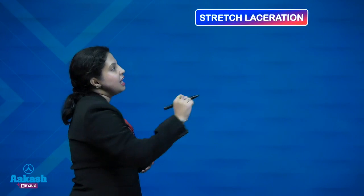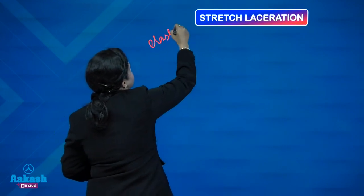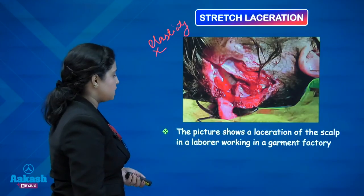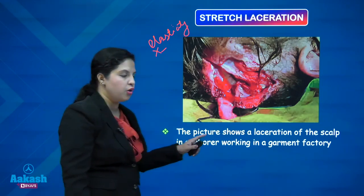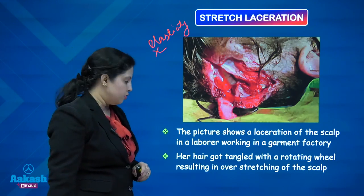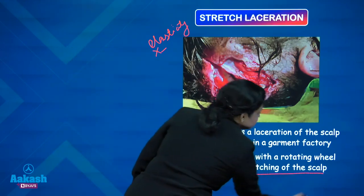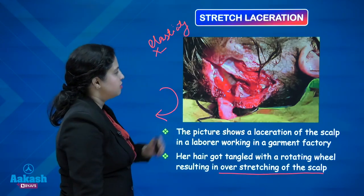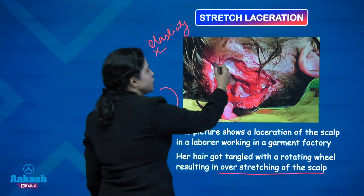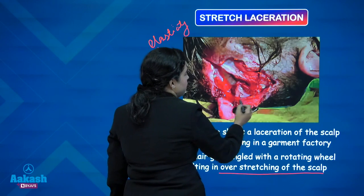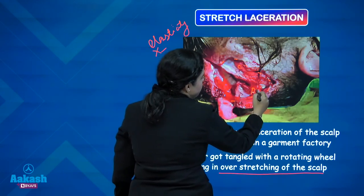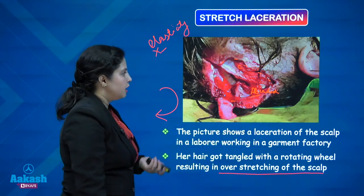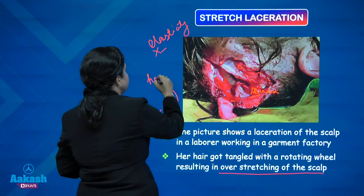Stretch laceration is where the elasticity threshold of the skin is tested and the elasticity breaks down, causing a stretch laceration. The picture shows a laceration of the scalp in a laborer working in a garment factory — her hair got tangled with a rotating wheel, resulting in over-stretching of the scalp. Because of this force, a stretch laceration took place. We can appreciate the margins are irregular, contused and mildly abraded. The hair bulbs will be crushed underneath.